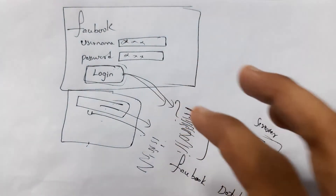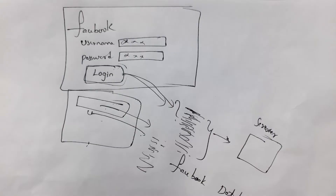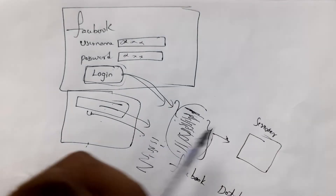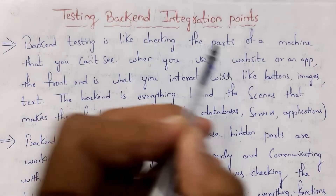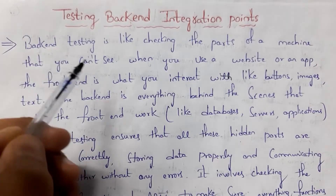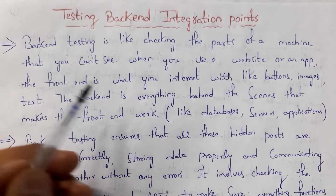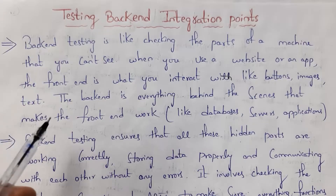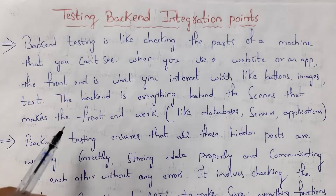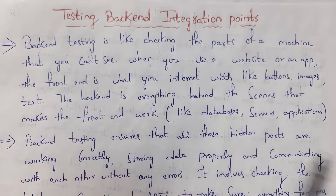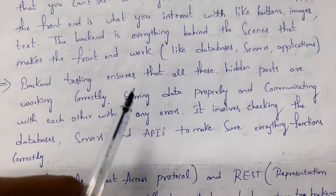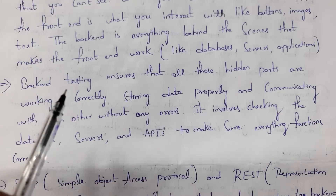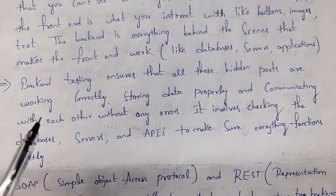So the frontend is whatever you see, and in order to make the frontend work you write code in the backend. That backend code is connected to servers, databases, etc. Testing backend code that is connected to servers, databases, and applications is known as backend testing. Backend testing checks hidden parts of the code like databases, servers, and APIs, ensuring all hidden parts are working correctly, storing data properly, and communicating with each other without errors.